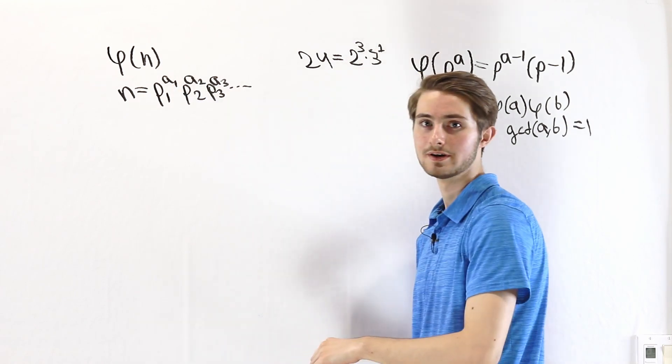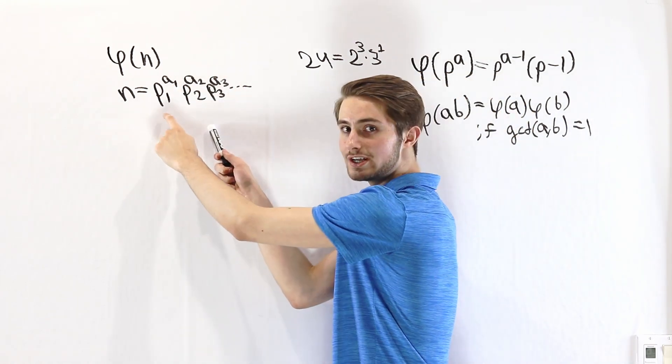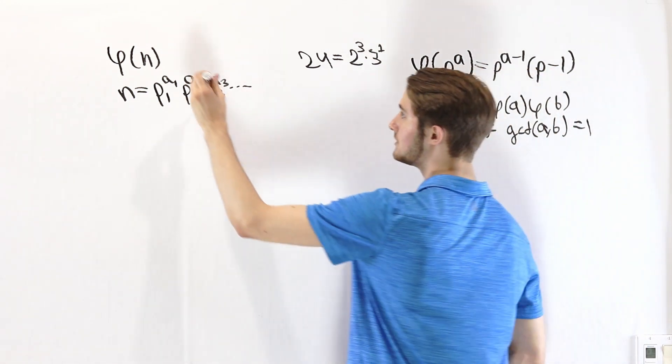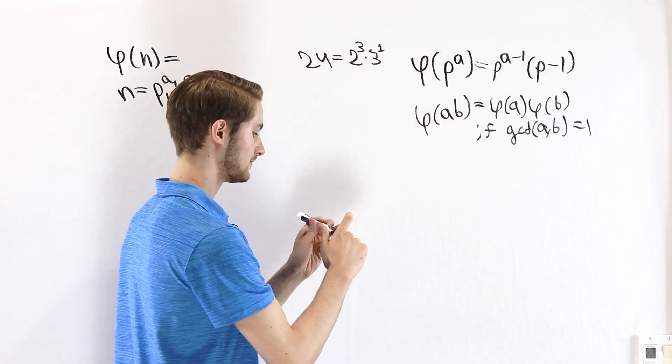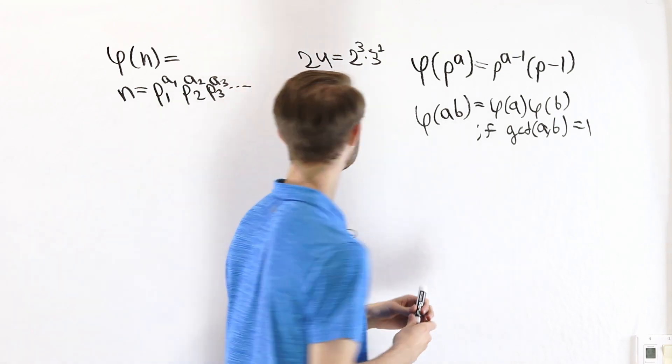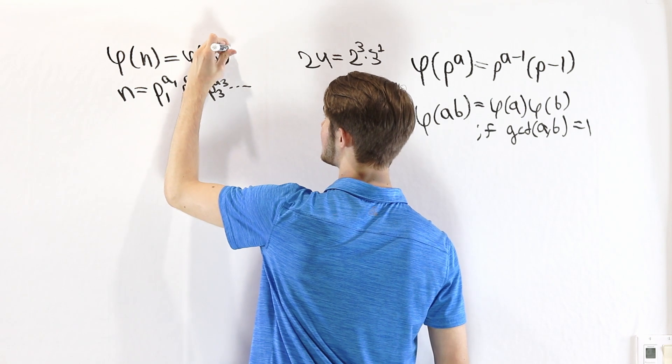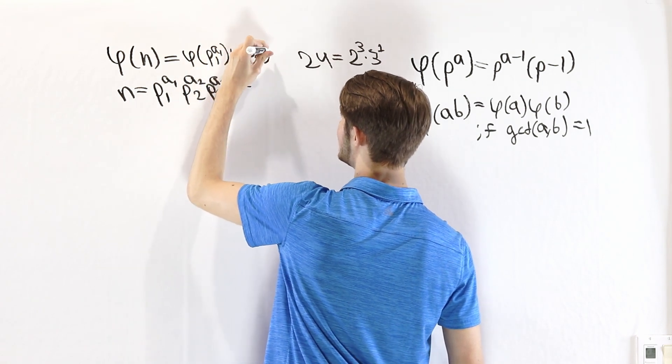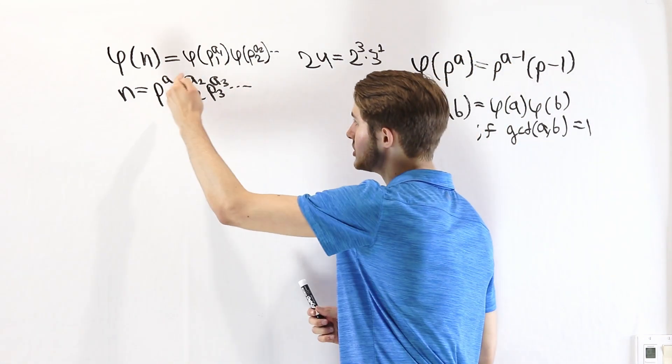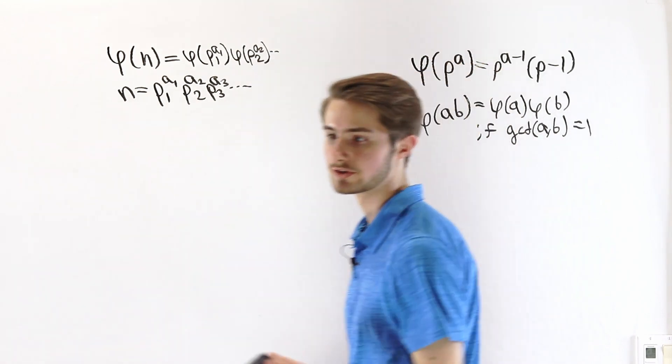If this is 2 to some power, and the second part is 3 to some power, those aren't going to share any common factors because they're both prime. What that means is we can split up phi of n using this second rule. We know that each of the prime powers is co-prime to the other ones. So phi of n is equal to phi of p1 to the a1 times phi of p2 to the a2, and so on. We multiply the phi of each of these different factors. That product is going to give us the original totient function.